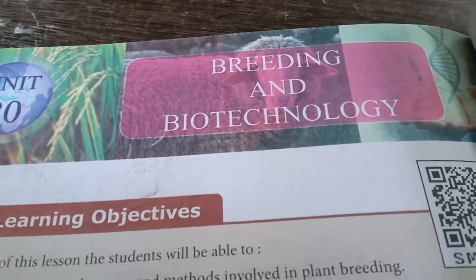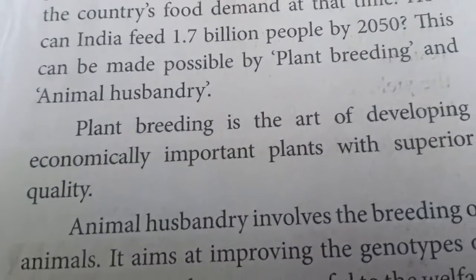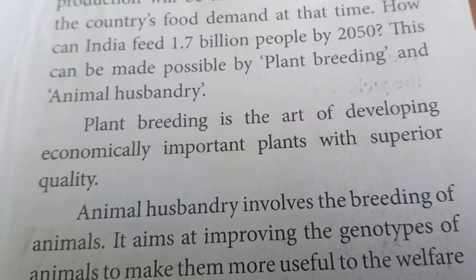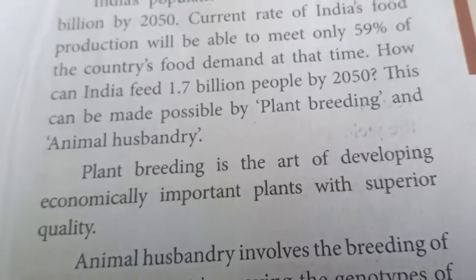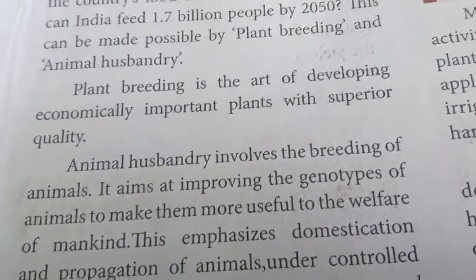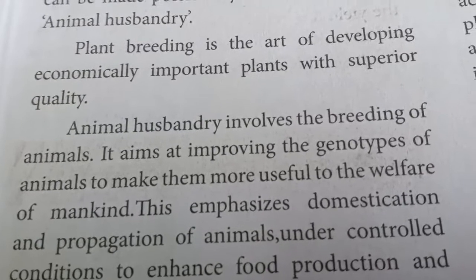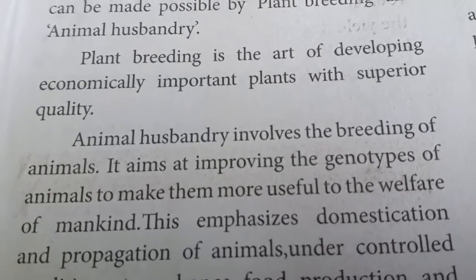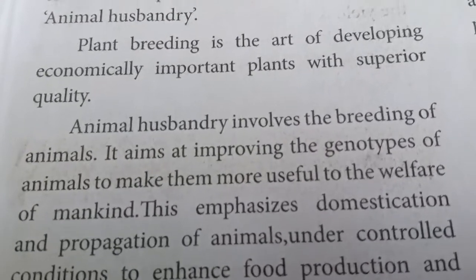We are going to study about the various technological developments in breeding. First, let me explain what plant breeding is. Plant breeding is the science of developing economically important plants with superior quality yield. Animal breeding is also the same — where we breed a good variety of animals. It aims at improving the genotype of animals to make them more useful to the welfare of mankind.